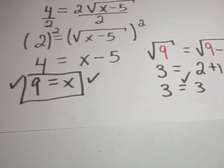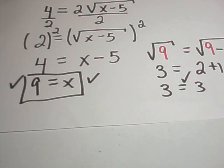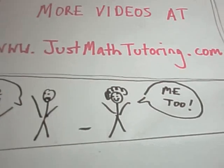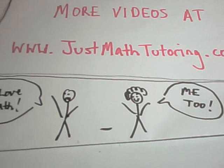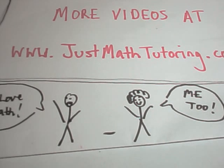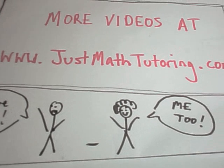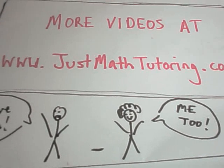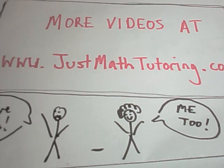In this case we had square roots and we were squaring both sides. But if you had a cube root, you would do the same thing — isolate the cube root and cube both sides instead. If you have any questions, feel free to send me an email. Also feel free to take a look at my website — I've got links to tons of free math videos. The more specific your question, the more specific my answers can be.